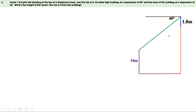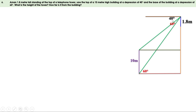Since the depression angle is 60 degrees, the alternate angle formed when a pair of parallel lines is intersected by the line of sight is also 60 degrees. Drawing a line parallel through the top of the tower, these two angles are equal — so the alternate angle for 40 degrees is also 40 degrees. Now let us give a name for this figure.